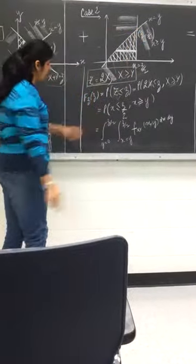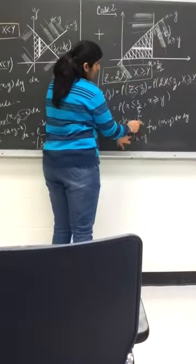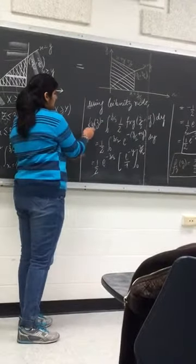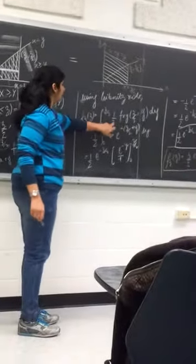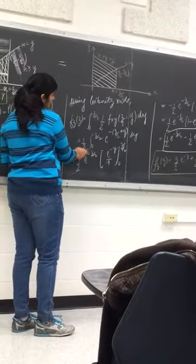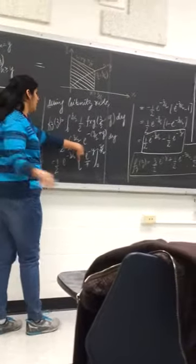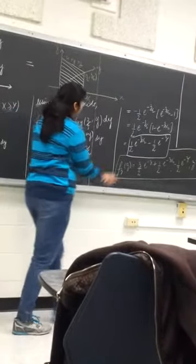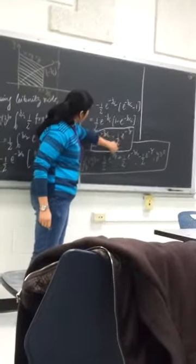We put the limits: y goes from 0 to z/2 and x goes from y to z/2. We have f(x,y) dx dy. Again we apply the Leibniz rule. Differentiating the upper limit z/2 gives a factor of 1/2. We get f_Z of z equals (1/2) times the integral from 0 to z/2 of f(x,y) evaluated at x equals z/2. Since f(x,y) is e raised to the power minus x plus y, we get (1/2) times the integral of e raised to the power minus (z/2 plus y) dy. Integrating, we get (1/2) e raised to the power minus z/2 minus (1/2) e raised to the power minus z.